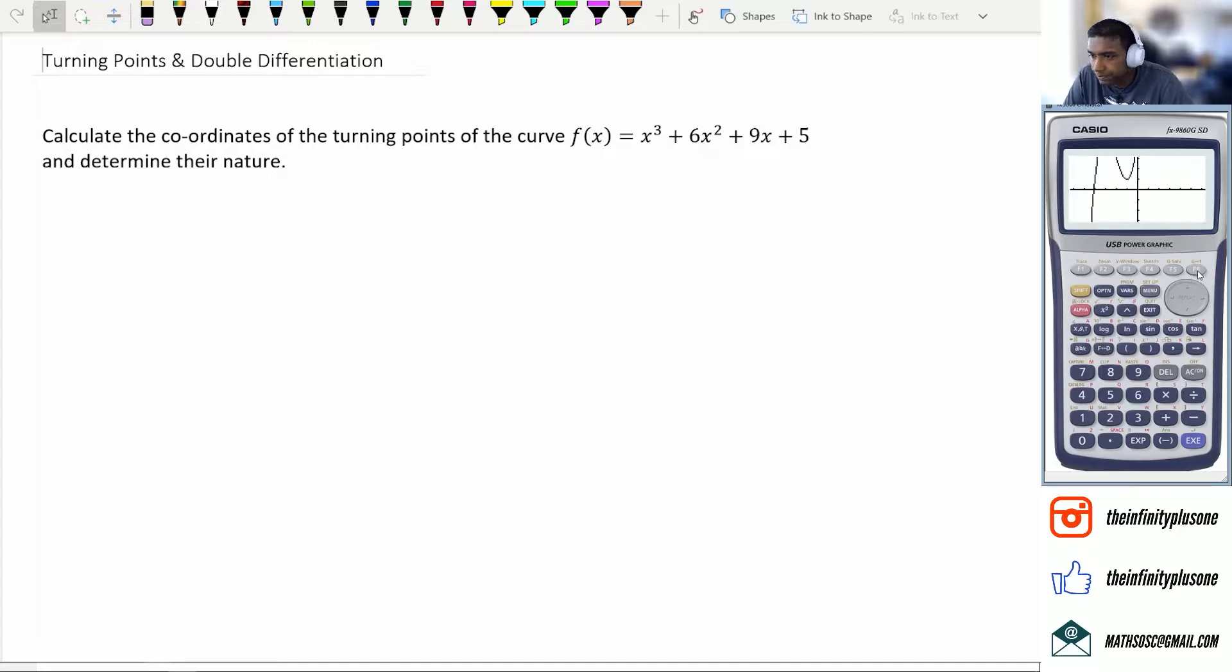And when we click on draw, there's our graph right there. You can already see where the minimum point is. The maximum is there. You can actually click on G-solve and it should give you what the max and minimum point is. So if you click on maximum, there's your answer: negative 3 and 5.